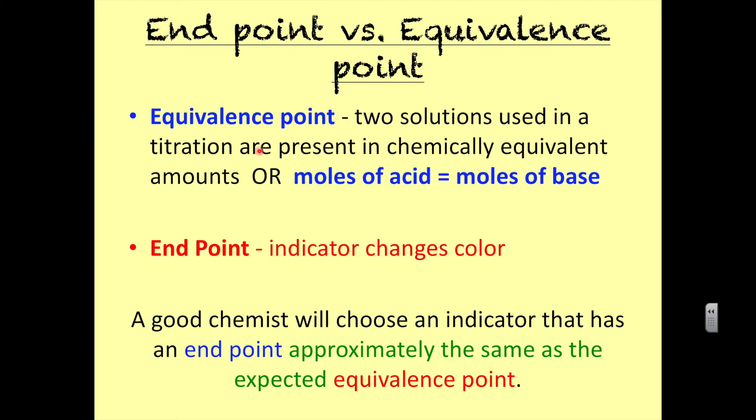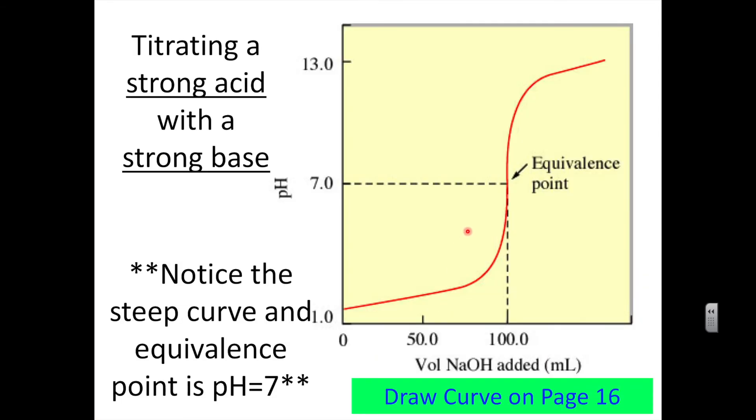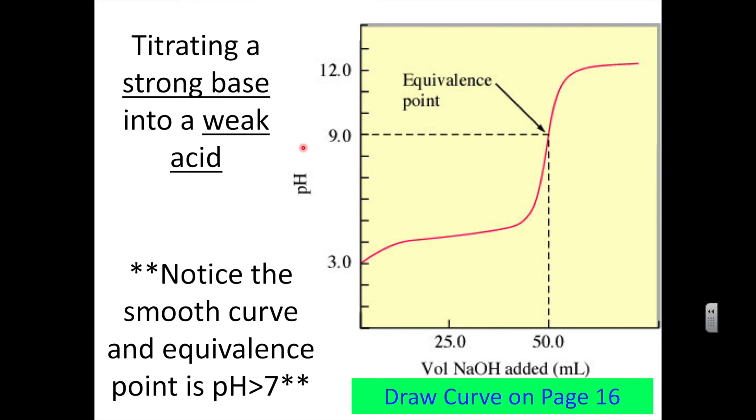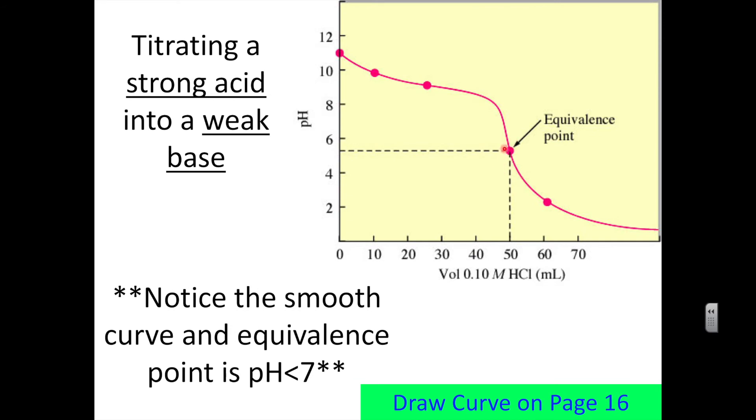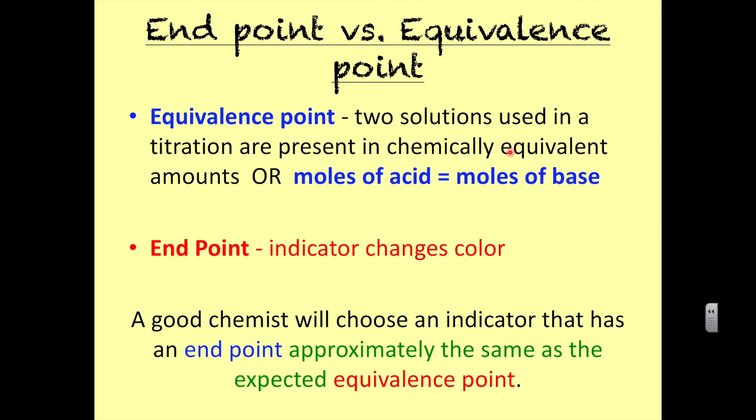That equivalence point that we talked about is where the moles of acid equals the moles of base - that was the point on the graph that we saw. The endpoint is where the indicator changes color. So we want to choose an indicator that has an endpoint approximately the same as the equivalence point. A strong acid and strong base has an equivalence point of seven. A strong base and a weak acid has an equivalence point at nine, and this equivalence point is a little greater than five.